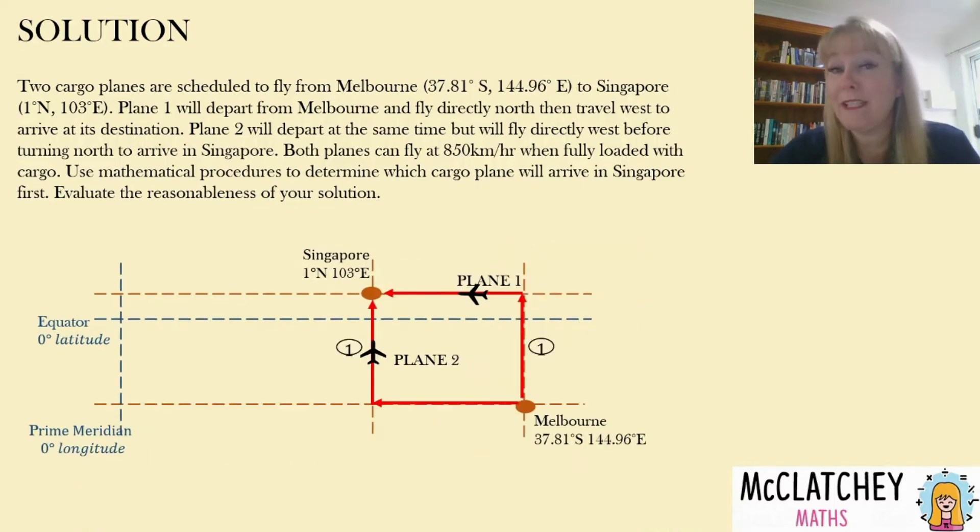Okay so I've moved that a little bit to the left and we can do our calculations on the right. We're going to start with the northern bound parts of both journeys because this is the part that both journeys have in common and they are both the same length. So we're going to work out firstly what's the difference in latitude that the plane from Melbourne is flying to get up to the latitude of Singapore. When it's at Melbourne it's 37.8 degrees south of the equator plus that one degree north that it travels past the equator to get to Singapore gives us a difference in our latitudes of 38.81 degrees and this is our angular difference.